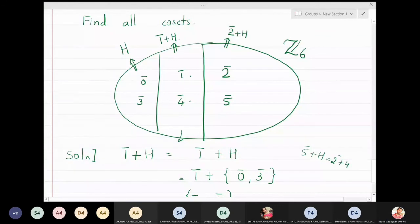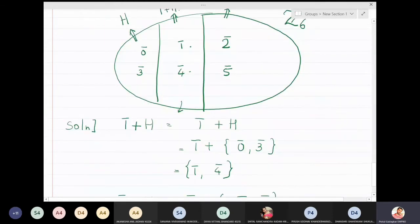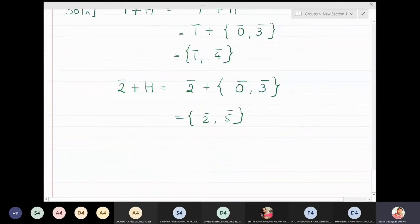So here in this example we observe that we get only three different cosets. The three different cosets are: first is 1̄ + H, second is 2̄ + H, and third is H itself.